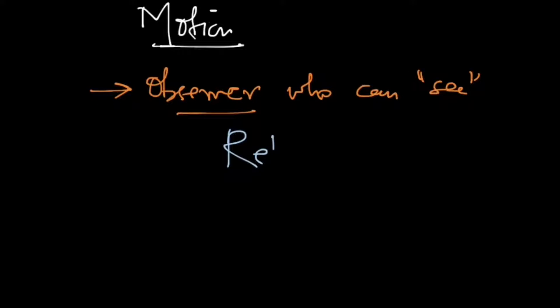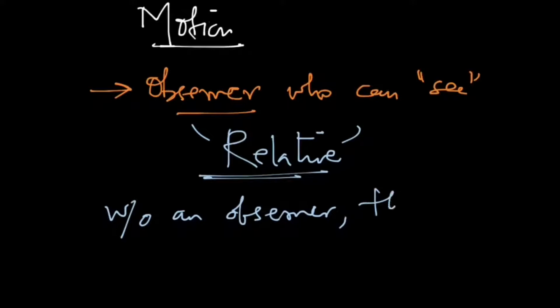What is motion? Before we define motion we need to have somebody who can define for us whether a particle is moving or not. That is we need to have an observer who can see something moving. So motion is actually a relative term. What this means is that without an observer there is no motion.